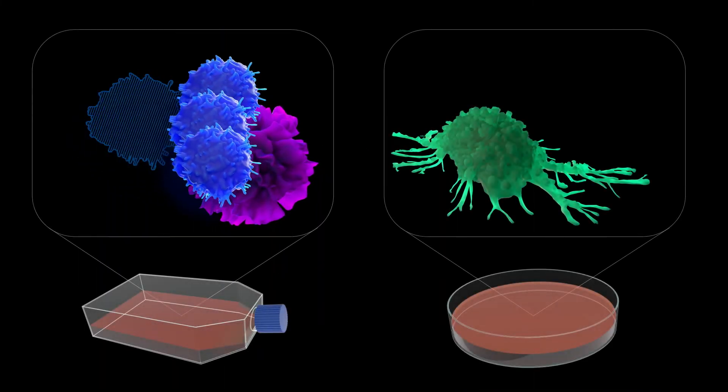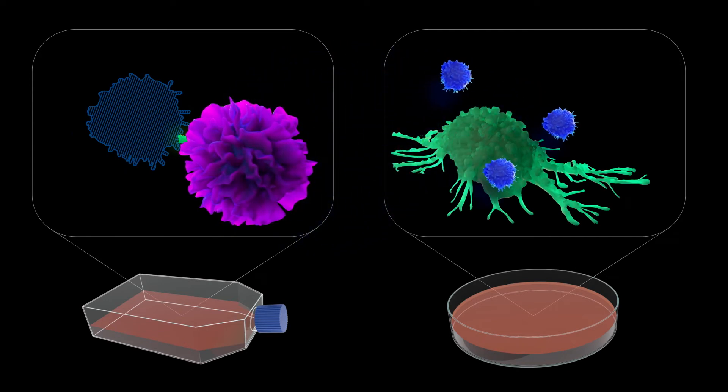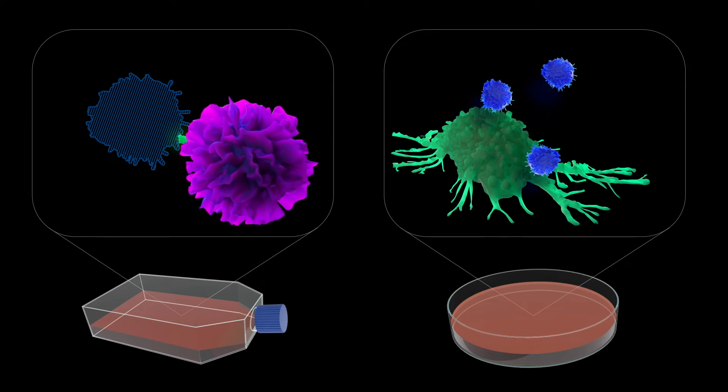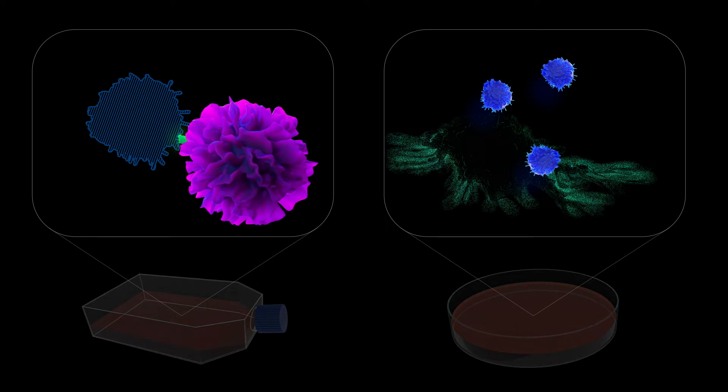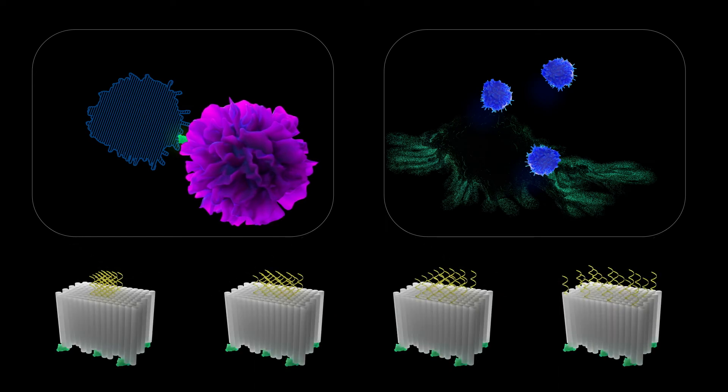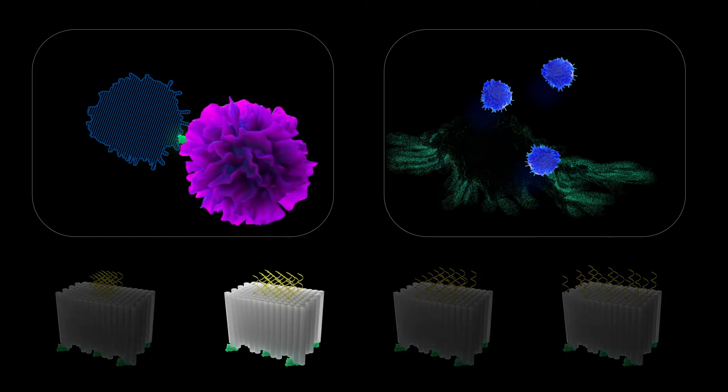The stimulated CD8 T cells are then isolated and co-cultured with target tumor cells. By measuring the activation levels of dendritic cells and T cells and the numbers of killed tumor cells, the researchers have identified the optimal spacing configuration for CPG oligonucleotides to induce the most effective tumor cell-directed immune response.